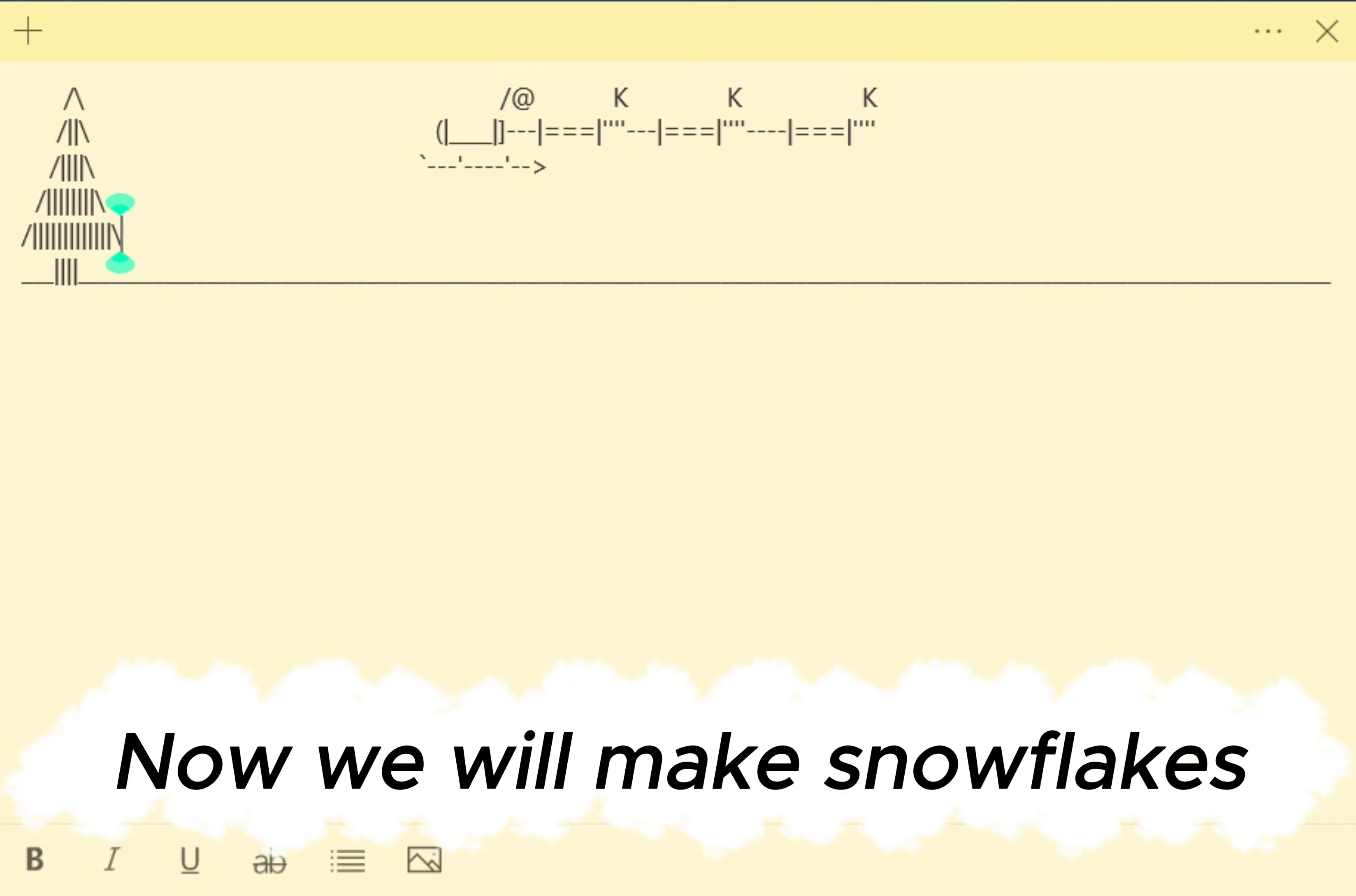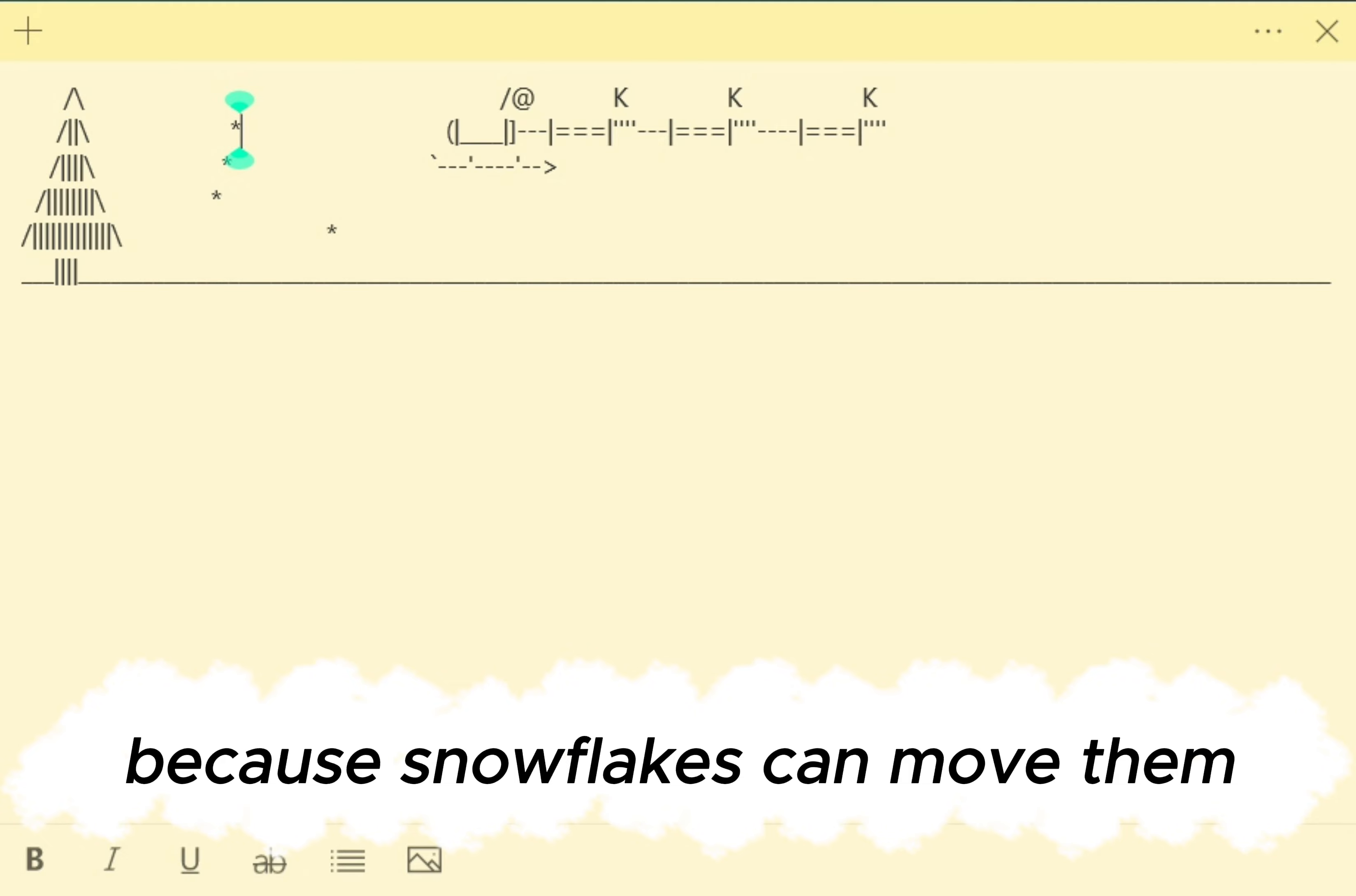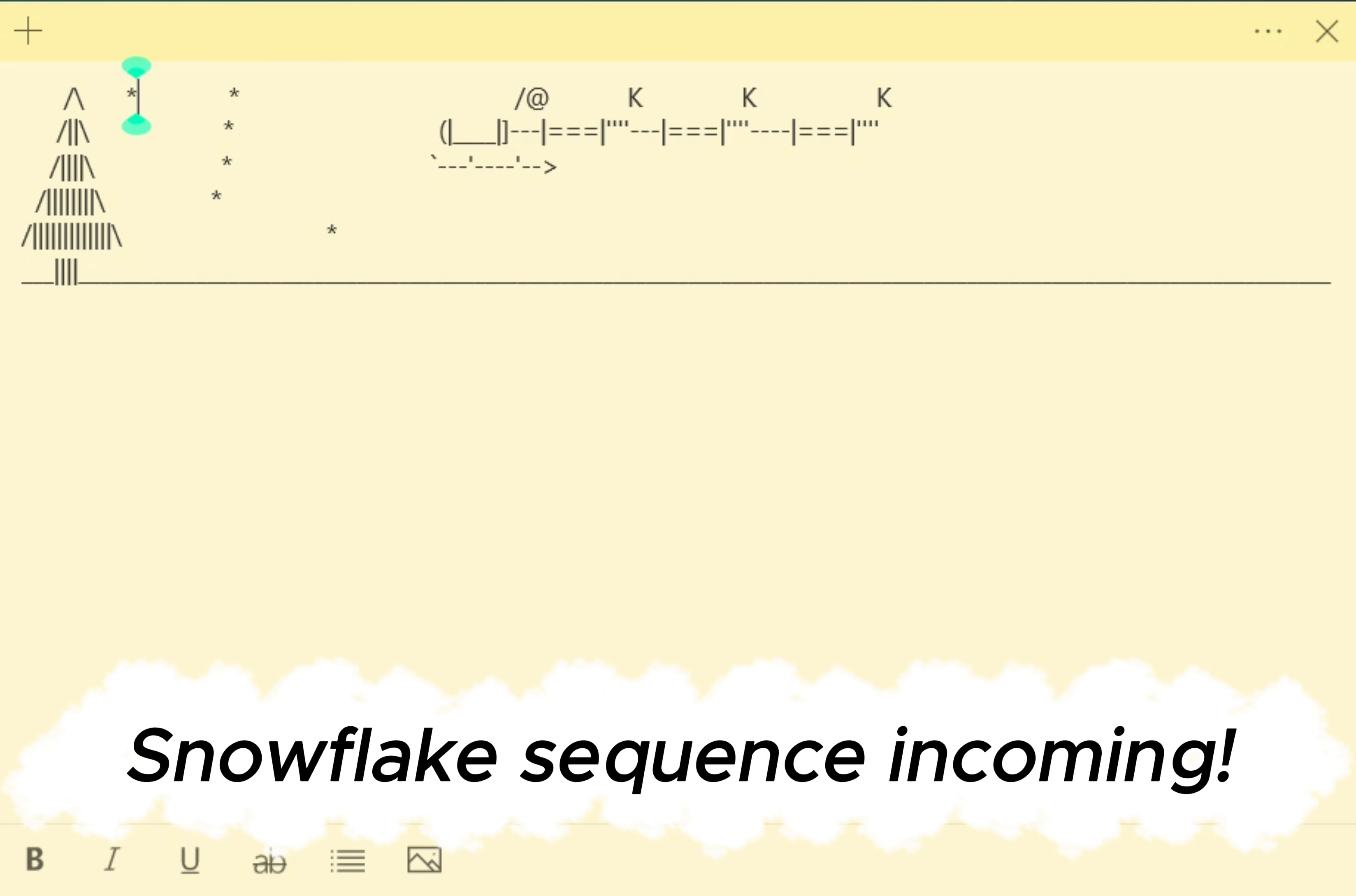Now we will make snowflakes. Hold shift and press eight. Don't forget to reposition parts later or right away. Because snowflakes can move them. Use backspace or space bar. Snowflake sequence incoming.